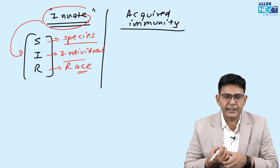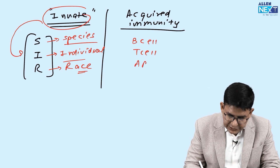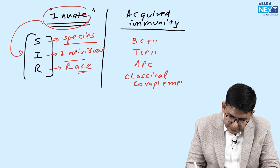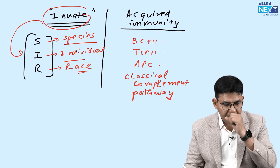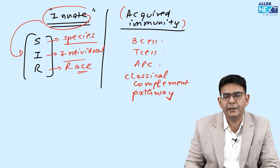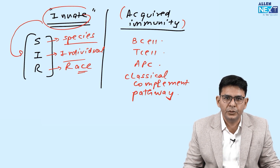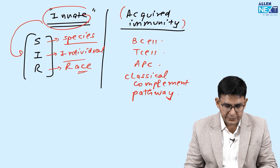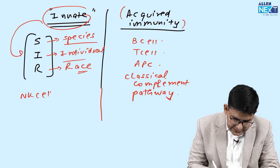Four things are mainly part of acquired immunity: B cell, T cell, antigen presenting cell, and classical complement pathway. These four are part of acquired immunity, and all other things are part of innate immunity. So most things belong to innate immunity, and very few things belong to acquired immunity.